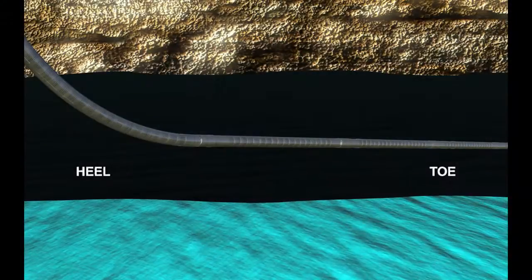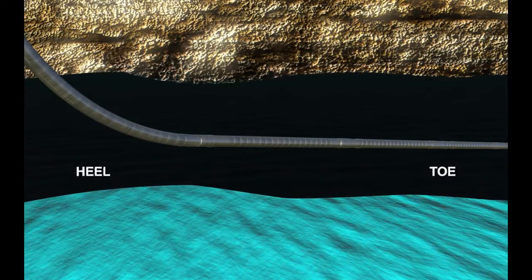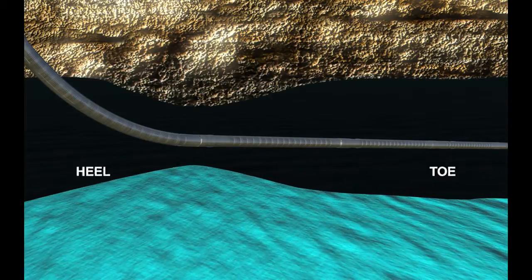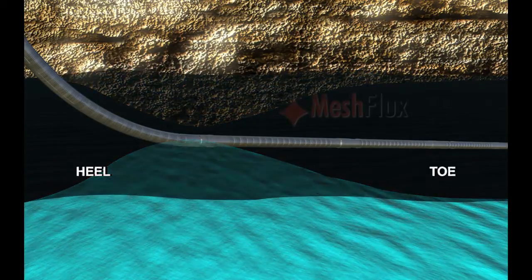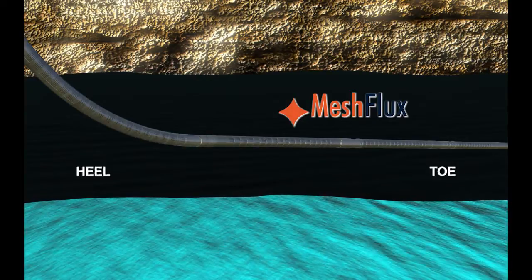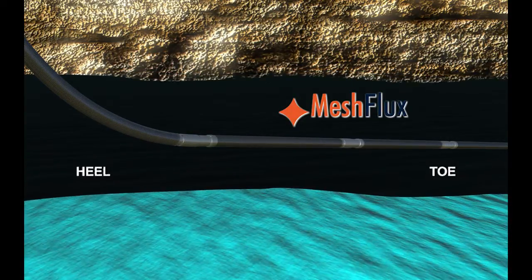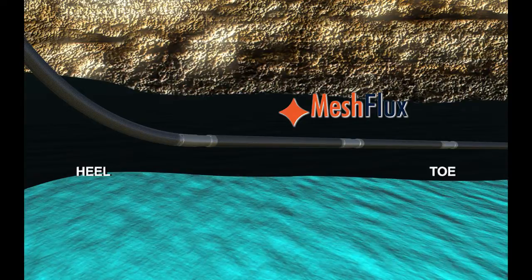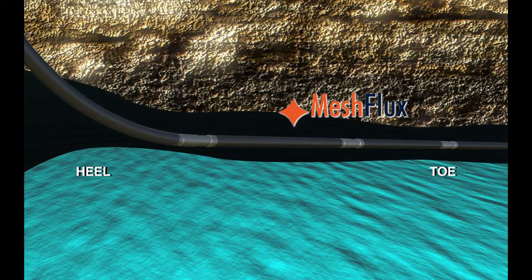In a homogeneous formation, production without ICDs creates lower pressures at the heel, leading to early water or gas coning, and fails to remove formation damage at the toe. Mesh Flux ICDs maximize oil recovery and production by equalizing the influx of oil from heel to toe.